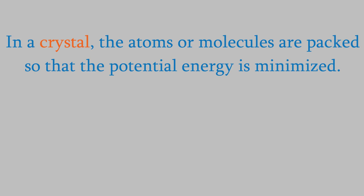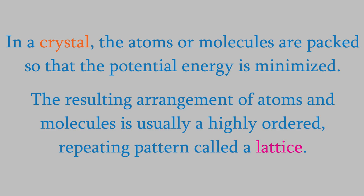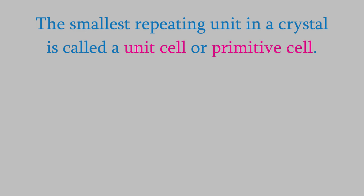The resulting configuration of molecules usually results in a highly ordered repeating pattern called a lattice. The smallest repeating unit in a crystal is called a unit cell, or sometimes a primitive cell.